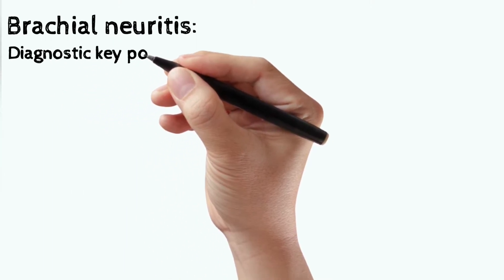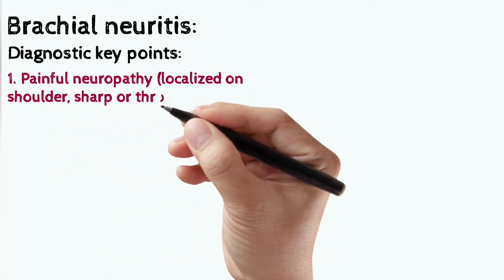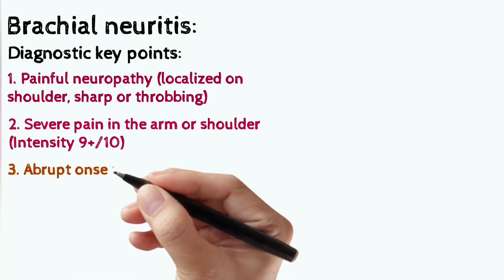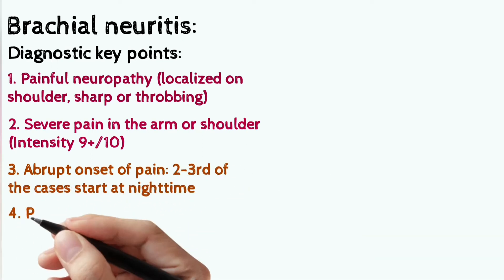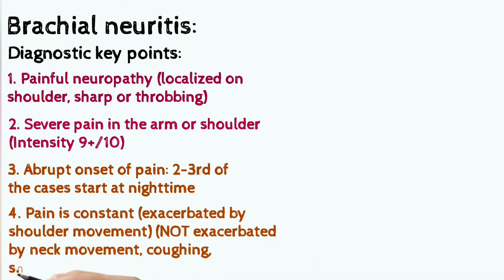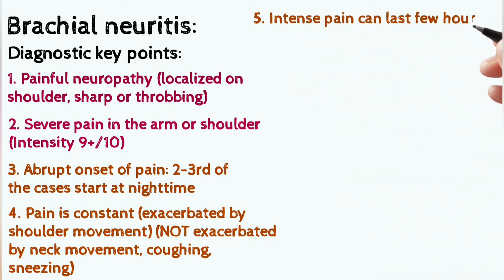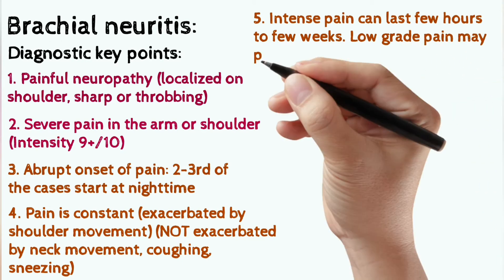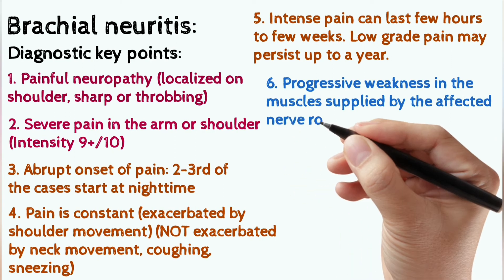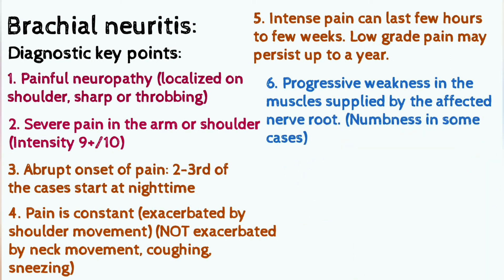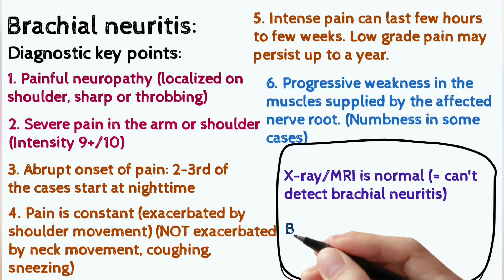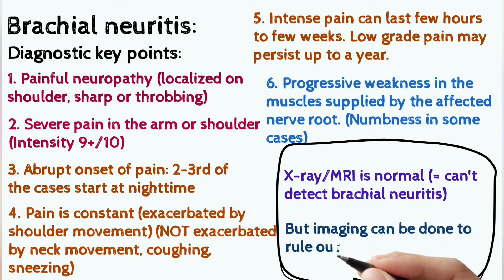Diagnostic key points of brachial neuritis are painful neuropathy localized on the shoulder, sharp or throbbing pain. Severe pain in the arm or shoulder with intensity 9+ out of 10. Abrupt onset of pain. Two-thirds of cases start at nighttime. Pain is constant, exacerbated by shoulder movement but not by neck movement, coughing, or sneezing. Intense pain can last from a few hours to a few weeks; low-grade pain may persist up to a year. There is progressive weakness in the muscles supplied by the affected nerves and numbness in some cases. Note: x-ray and MRI are normal and cannot detect brachial neuritis, but imaging can be done to rule out alternative diagnoses.